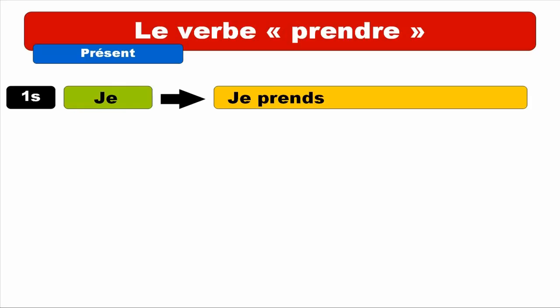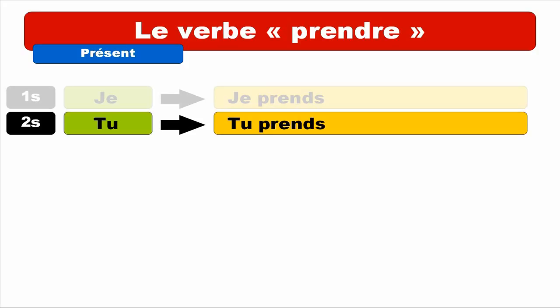You can see we've got an S and also a D at the end, but we don't pronounce them. The only thing we pronounce for this form is P-R-E-N — the sound PRENDS. Repeat. And for TU — TU PRENDS. Repeat. TU PRENDS. You can notice it's actually the same form as for JE. Final S and D are not pronounced.